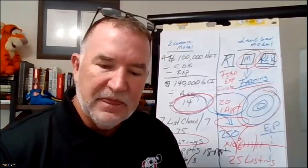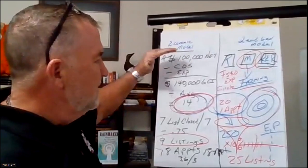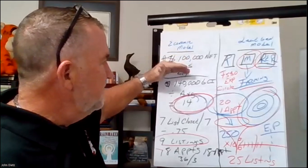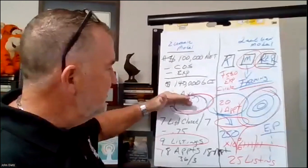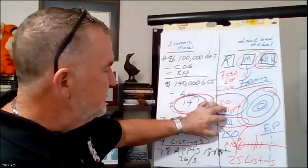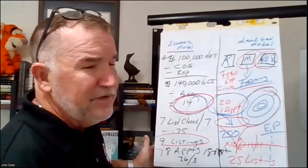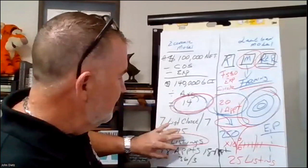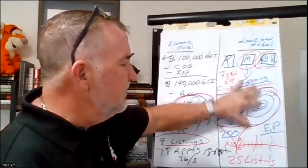Let's recap. You start with an economic model to know how many appointments you need to go on. Start with: I want to net $100,000. My cost of sales is blank. My expenses are blank. That means I need $140,000 GCI to net $100,000. My average commission is $10,000, so I need to close 14 sales. 50% on the seller side, 50% on the buyer side — close seven sellers. 75% of listings taken will close, so I need nine listings. A 50% conversion from appointment to listing taken means 18 appointments. The buyer side mirrors that, totaling 36 appointments or three appointments per month to net $100,000.